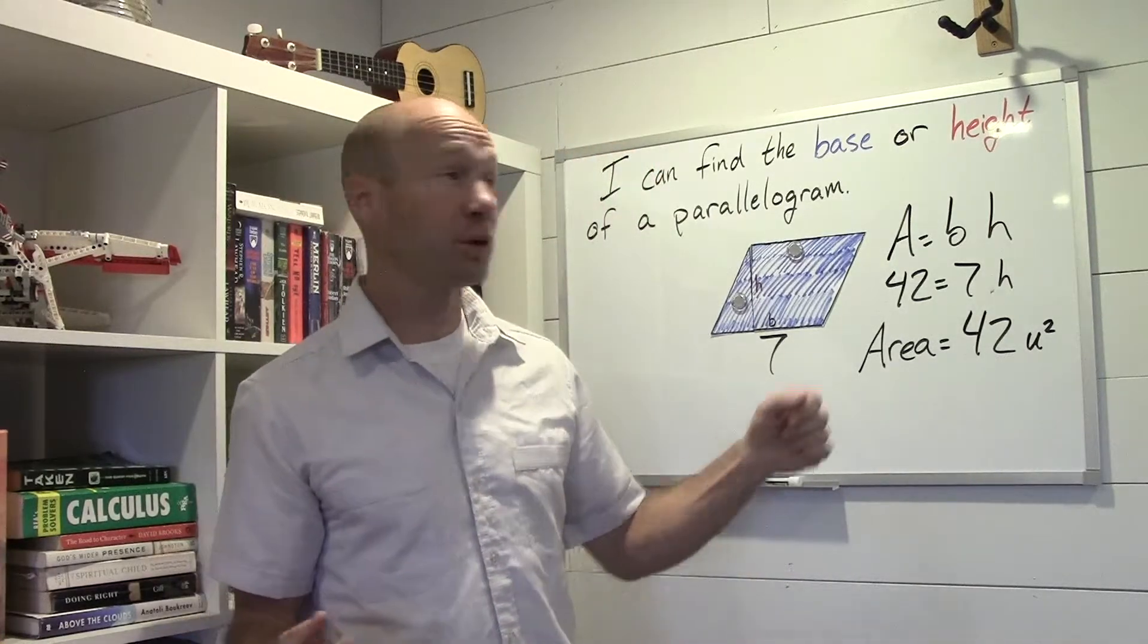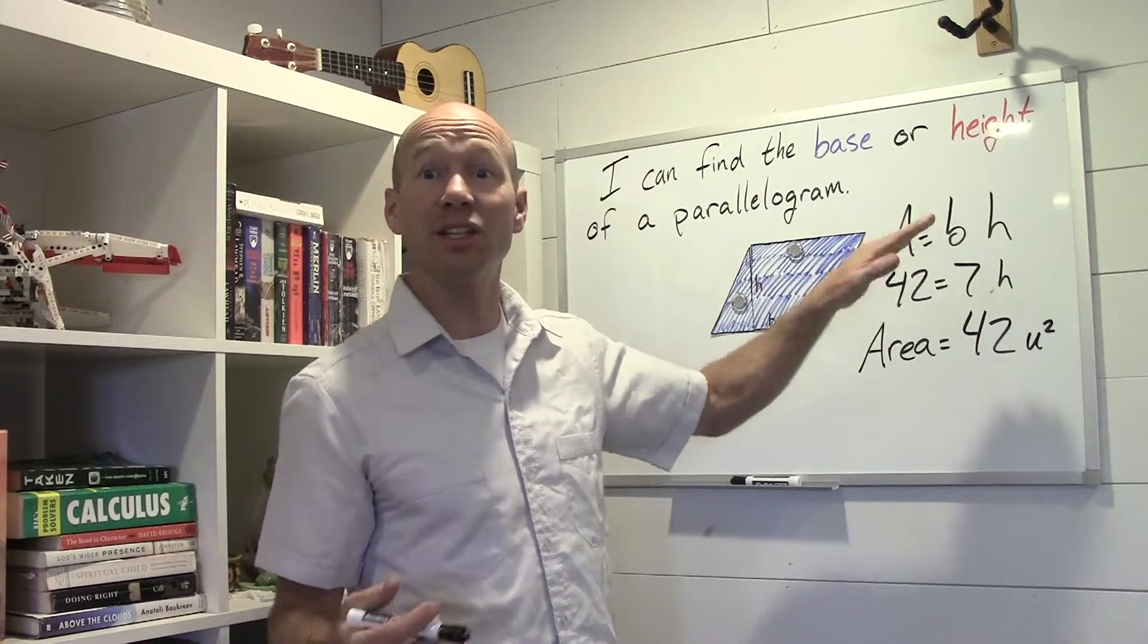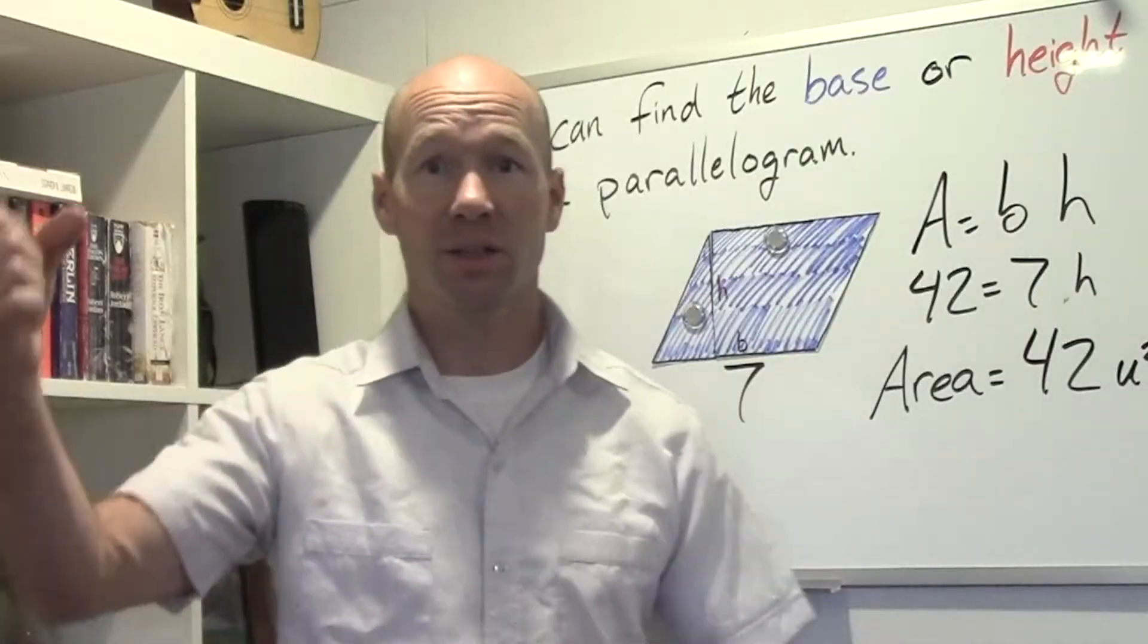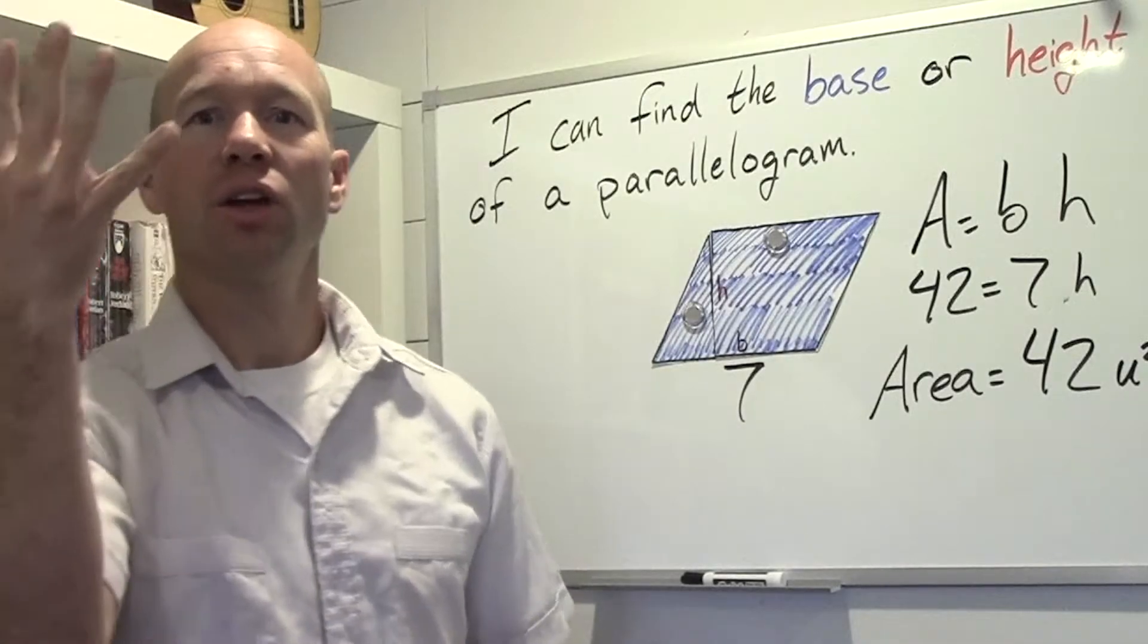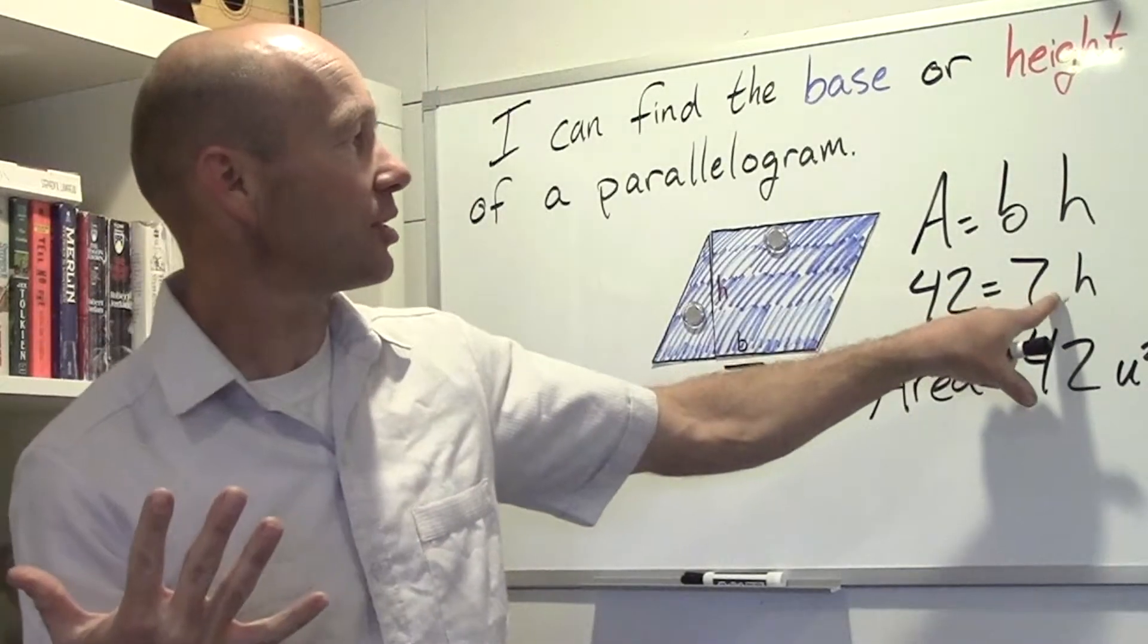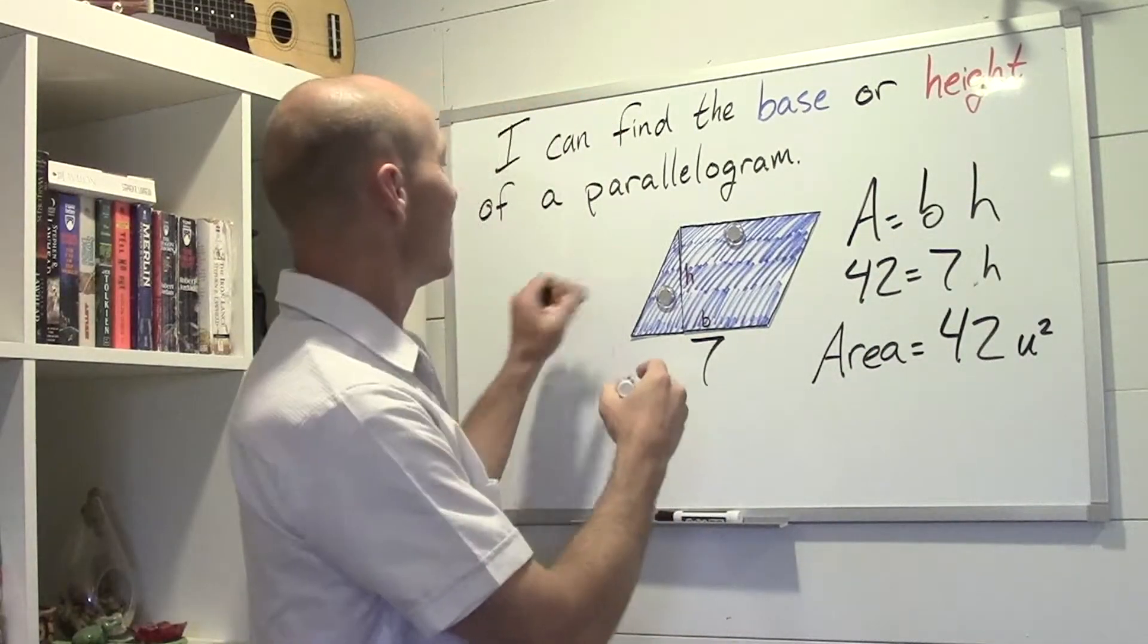So we can do a couple things. We could just say how many times seven do I need? How many times do I need to multiply by seven to get 42? And I can just count up: 7, 14, 21, 28, 35, 42. I need six times seven to get to 42, so I know that my height is going to be six. h equals six.